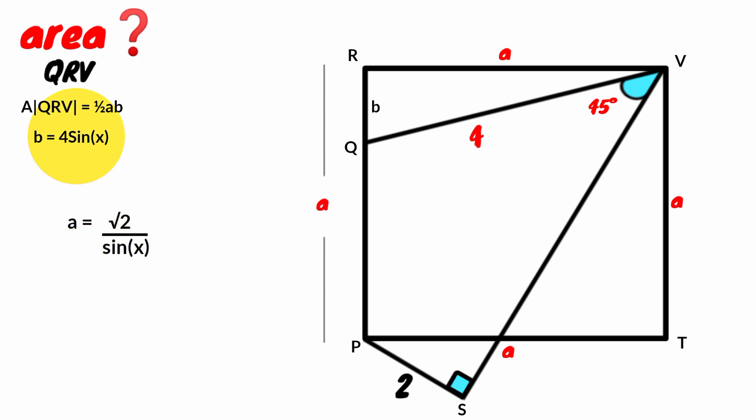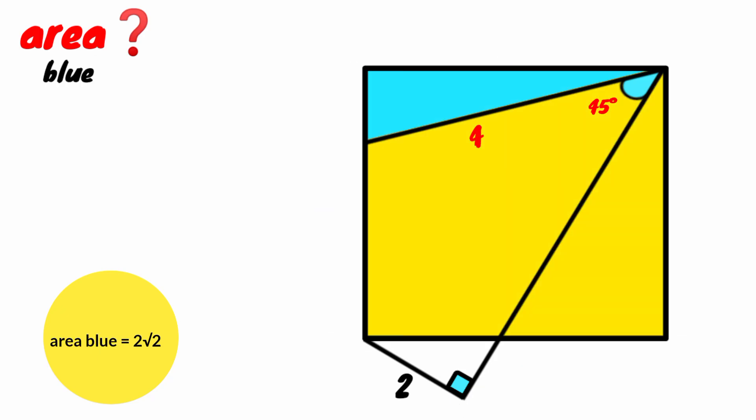Now we have B equal to 4 sin X and A equal to root 2 over sin X. Substitute it here. 1 over 2 times 4 sin X is 2 sin X. This sin X eliminates this 1 over sin X. So area of triangle QRV, which is blue area, equal to 2 root 2 square units.